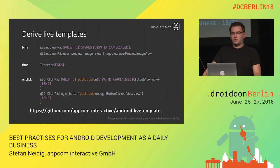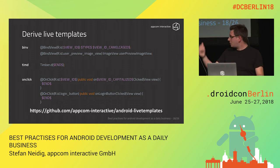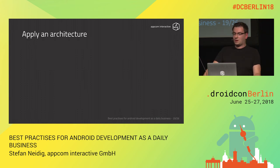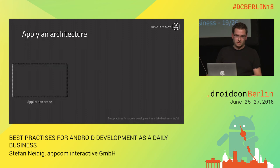The next thing is also pretty obvious: apply an architecture. Of course you all need an architecture in your Android app, and if you document and communicate it to the team, they can all apply it in each project — convention over configuration.